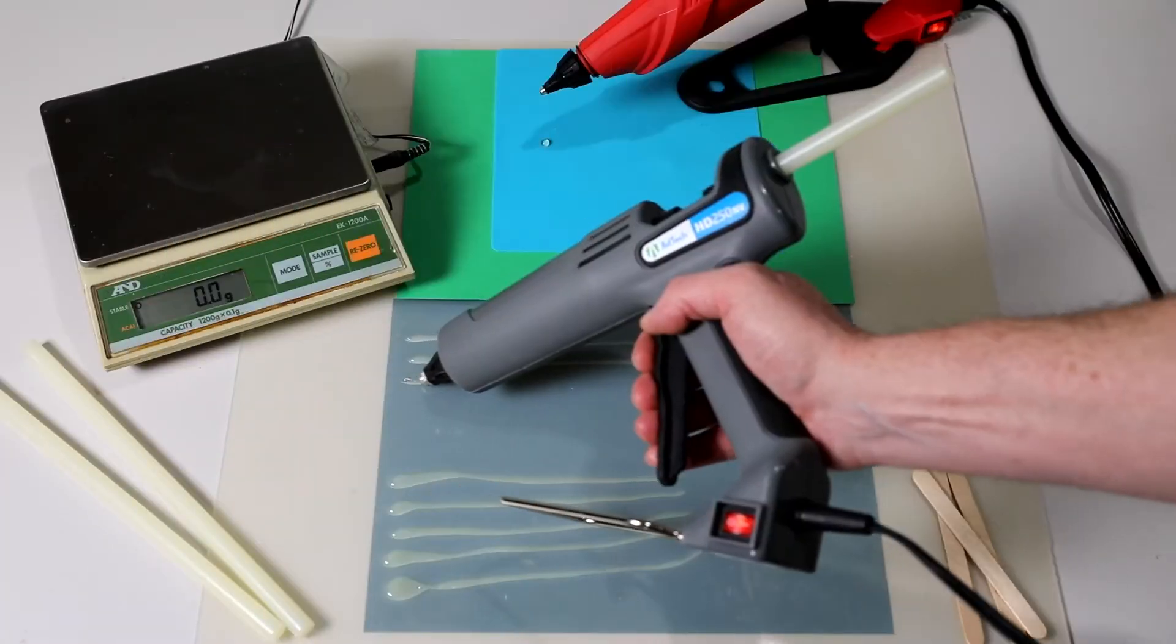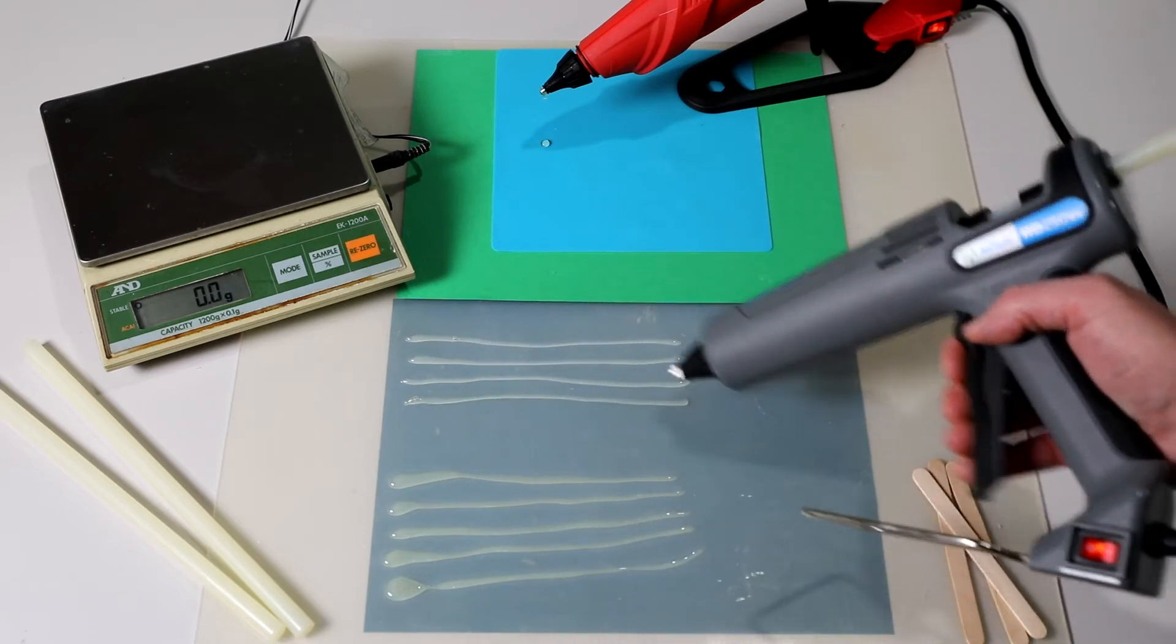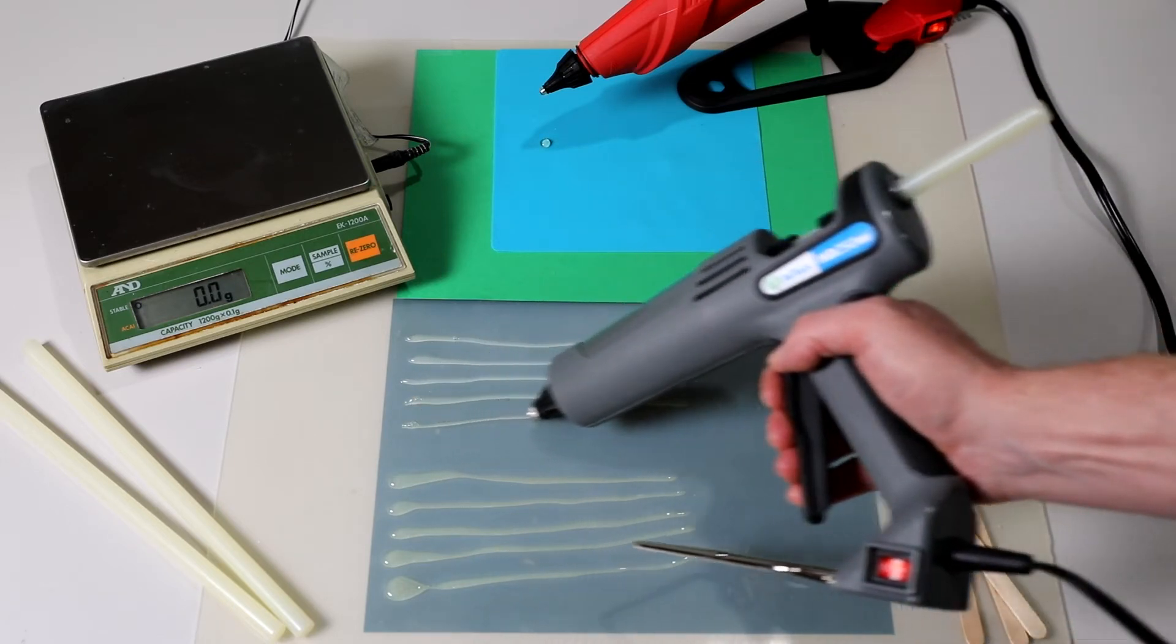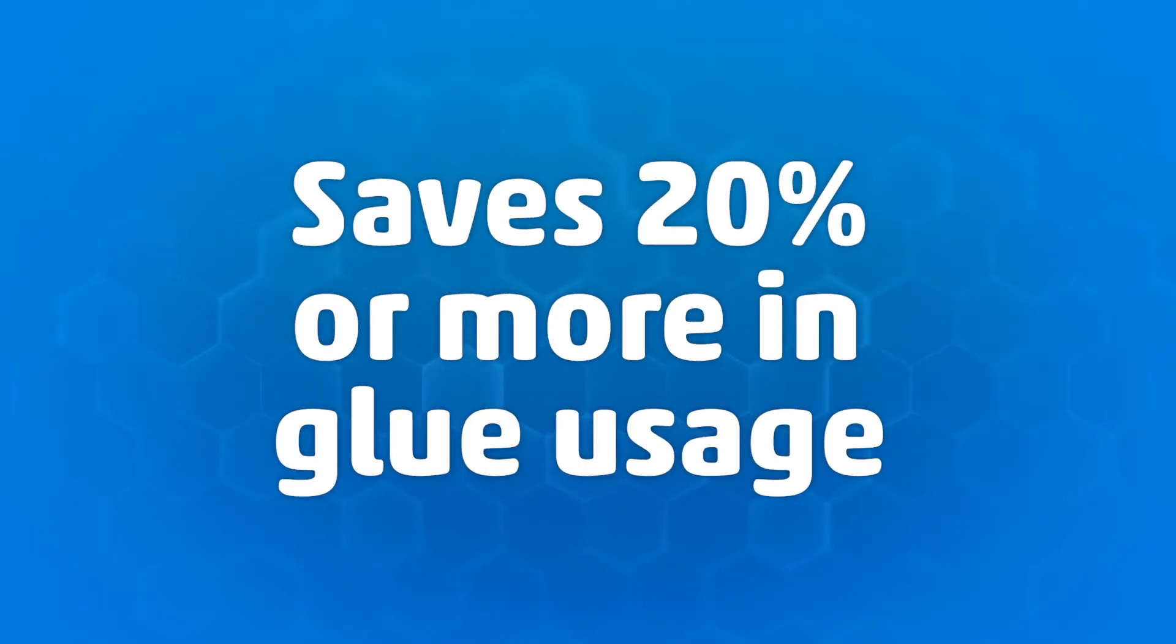The results are even, uniform glue lines which provide predictable and superior bonds without excess glue dispensing. This feature saves 20% or more in glue usage.